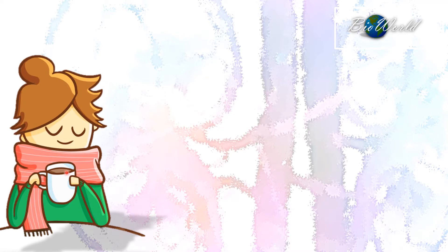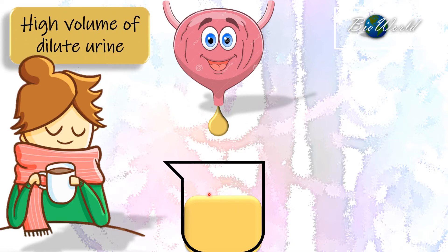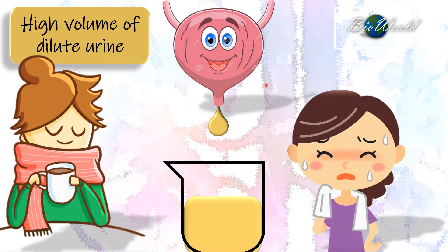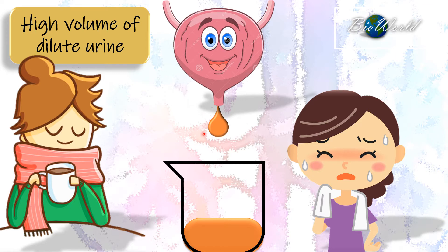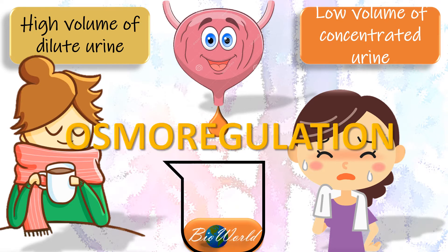Are there coffee lovers amongst you? If there are, you would be familiar with the urine you produce after drinking many cups of coffee — not only high in volume but very light in colour, indicating that the urine is dilute. However, if you go out for exercise, the urine volume decreases and the colour appears much darker, indicating concentrated urine. This difference in volume and concentration is related to a process known as osmoregulation. Welcome to BioWorld, where we will explore osmoregulation.